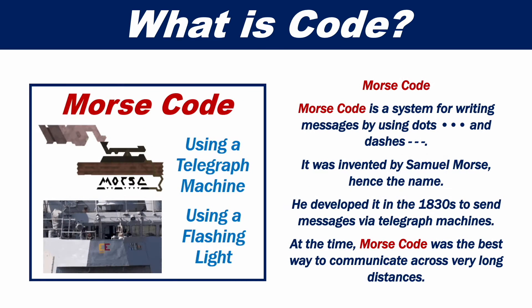Morse code. Morse code is a system for writing messages by using dots and dashes. It was invented by Samuel Morse, hence the name. He developed it in the 1830s to send messages via telegraph machines. At the time, Morse code was the best way to communicate across very long distances.